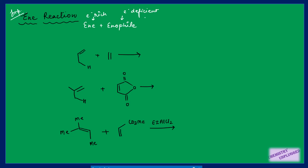The ene is a species which is electron-rich in nature, and the enophile is electron-deficient — it always wants electrons. If we attach an electron-withdrawing group, it will increase the reactivity of this reaction. Similarly, if we attach an electron-rich group, it will increase the efficiency of the ene, thereby increasing the rate of the reaction. The ene has an allylic hydrogen, so we need an alkene having an allylic hydrogen atom.